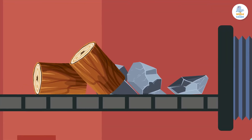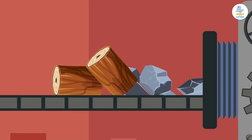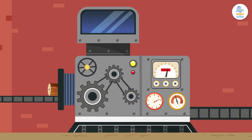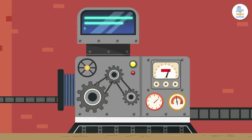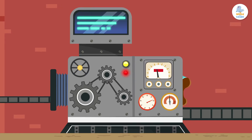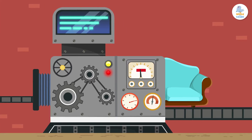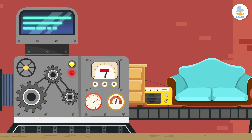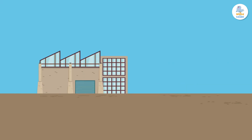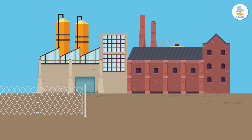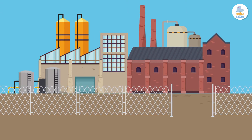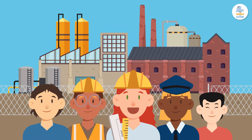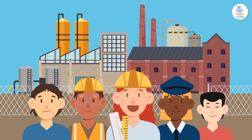Industry is the activity that uses machines and tools to transform raw materials into finished products. It's done in very large buildings called factories where many people work.